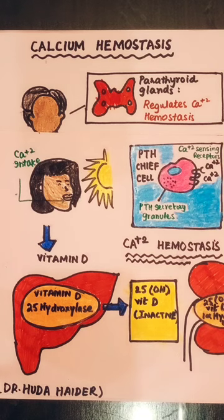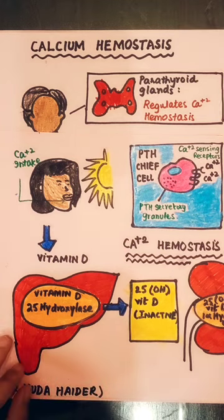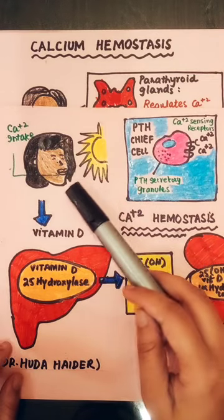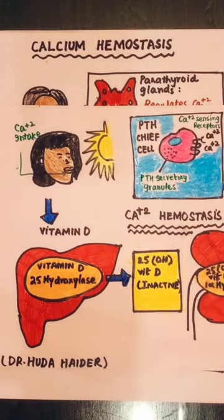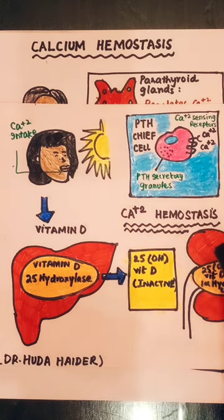Now we will learn the most important part: vitamin D. Vitamin D is a pro-hormone and exists in two major forms: vitamin D2, called ergocalciferol, and vitamin D3, called cholecalciferol. Vitamin D is obtained through calcium intake and sunlight exposure. It is made in the skin, placenta, and other tissues, but the skin has the most important role in its production.